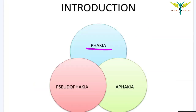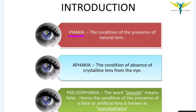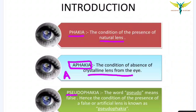In this video, let's learn about pseudophakia. The term phakia deals with the lens. Phakia is the condition of the presence of the natural lens in the eyes. Aphakia means absence of the crystalline lens from the eyes. In medical terminology, pseudo means false, hence pseudophakia refers to the presence of a fake or false lens — in ophthalmology, we call it an artificial lens.